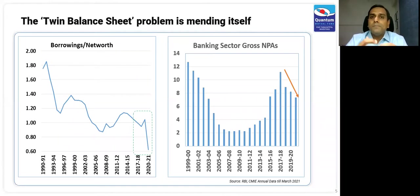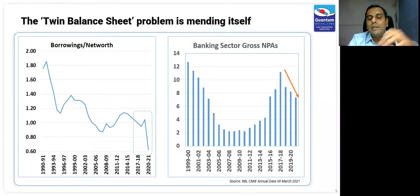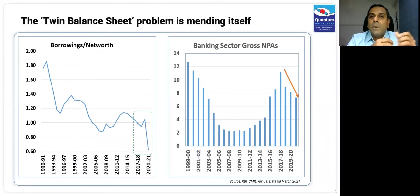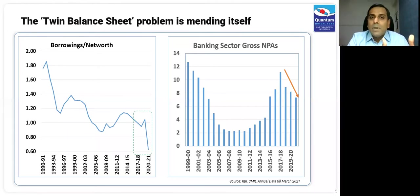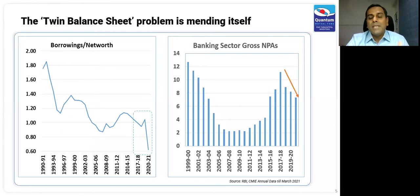The next point is the twin balance sheet problem. The left chart shows Indian corporate industry's debt-to-equity ratio. You can see it going down in recent years. Today, corporates are in a much better situation — debt levels are lower. Corporate tax cuts from September 2019 were completely passed on; companies used that to deleverage their debt and reduce interest costs. Smaller enterprises and informal companies have been impacted significantly, and large companies are getting their market share, growing revenues, and deleveraging.